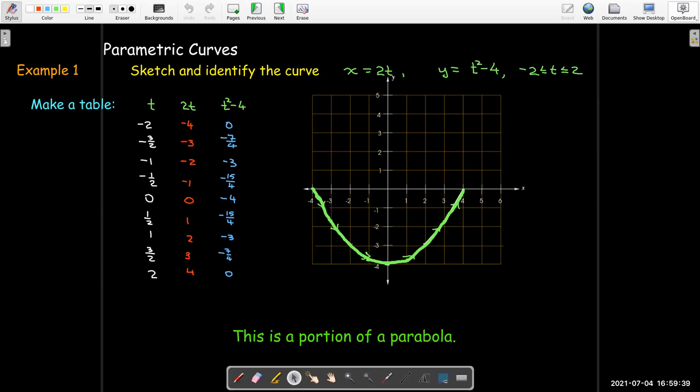Now, how do I know what the direction to go? Well, I start at t equals negative 2, which is at negative 4 comma 0. And then I traverse the curve in the direction until I get to t equals 2, which is 4 comma 0.